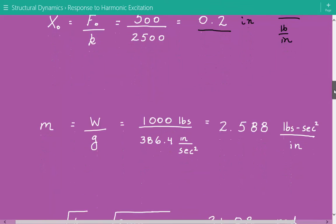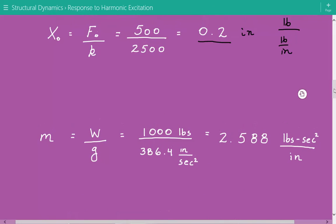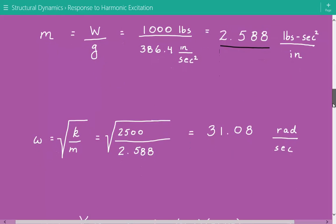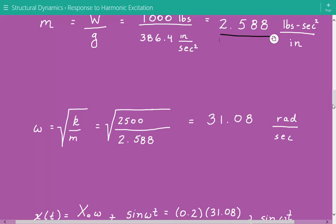Next, we're going to calculate the mass. Mass equals weight divided by gravitational acceleration: 1,000 pounds divided by 386.4 inches per second squared. Our mass equals 2.588 pound-second squared per inch. After this, we calculate the circular natural frequency, which equals the square root of stiffness divided by mass. That comes out to be 31.08 radians per second.